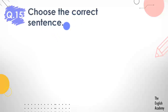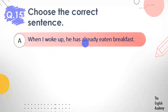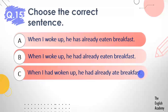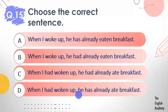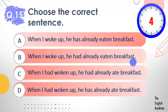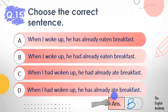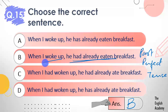Question number 15: Choose the correct sentence. Options: A) When I woke up, he has already eaten breakfast. B) When I woke up, he had already eaten breakfast. C) When I had woken up, he had already ate breakfast. D) When I had woken up, he has already ate breakfast. The answer is option B — When I woke up, he had already eaten breakfast. 'Had already eaten' is past perfect tense, and 'when I woke up' is simple past tense.